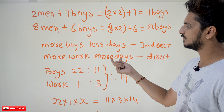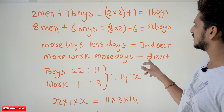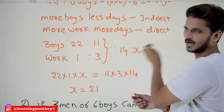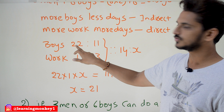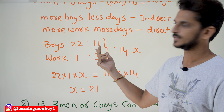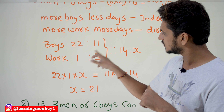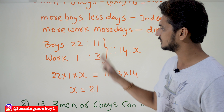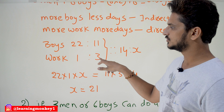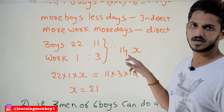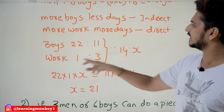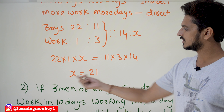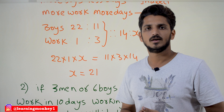As number of boys increases, days decrease — indirectly proportional. As work increases, days increase — directly proportional. So: 14 is to x. Boys ratio reversed: 22 is to 11. Work ratio: 1 is to 3. Product of extreme terms equals product of mean terms: 22 × 1 × x = 11 × 3 × 14. Therefore x = 21 days.